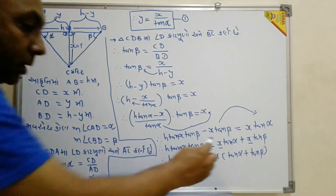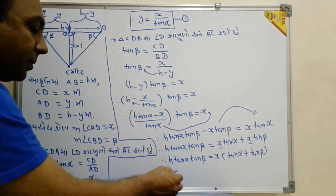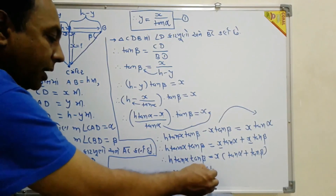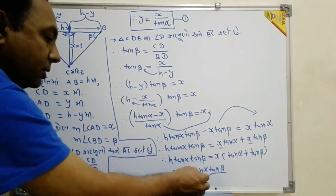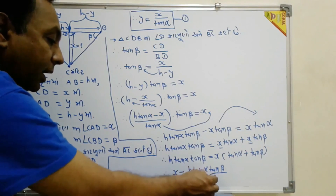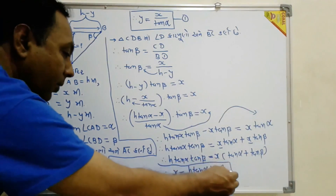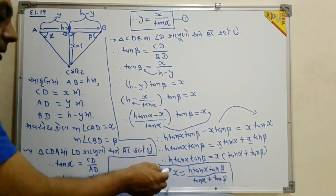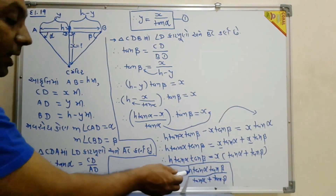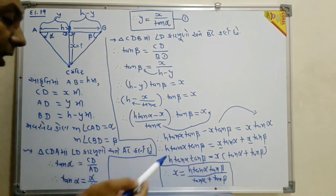So the answer is: x = H · tan(alpha) · tan(beta) divided by (tan(alpha) + tan(beta)). This is the formula for the depth of the Mandini Torch (temple) from the given observations.